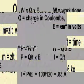Thus, W equals Q times E, where W is the work done in joules, Q is the charge in coulombs, and E is the EMF in volts. Since power is the rate at which work is done, power equals W divided by T. And since W equals Q times E, then power equals Q divided by T times E. And since I is equal to Q divided by T, then power P is equal to I times E.